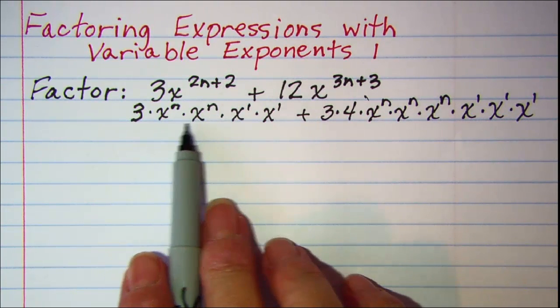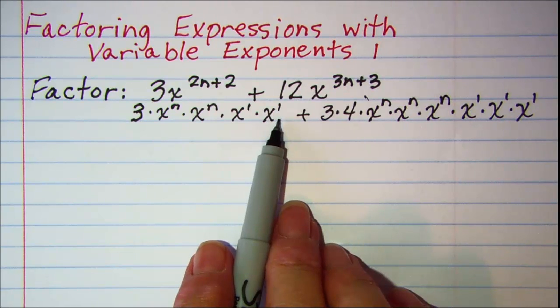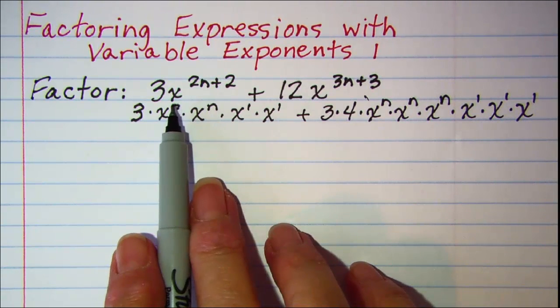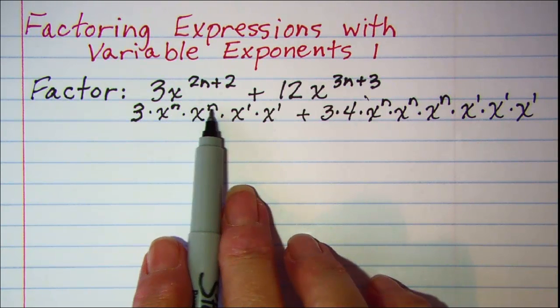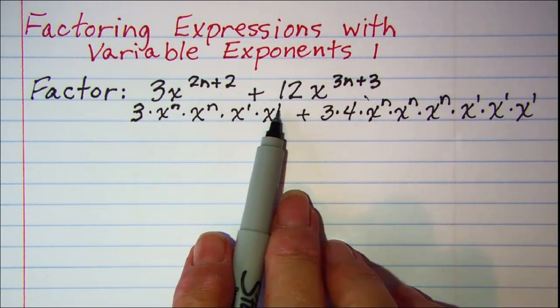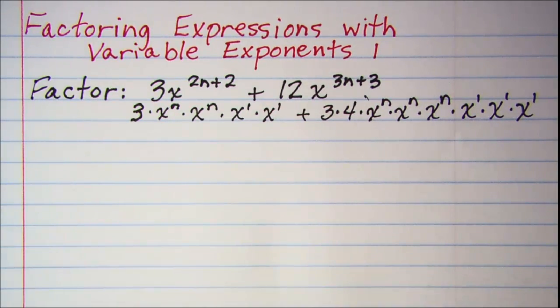Since all four of these factors have a base of x, then I would just add those exponents. So the 2n from this one plus the 2 here. So that's how we would write those.